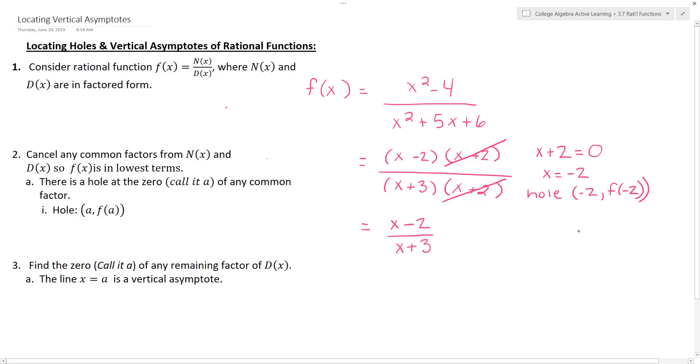To get that f of negative 2 piece of the hole, wherever there's an x, put parentheses. Then go ahead and fill in what was an x with negative 2 because that's what x is. When we simplify this, we're left with negative 4 over 1, which is negative 4. This gives us a hole at the point negative 2, negative 4.